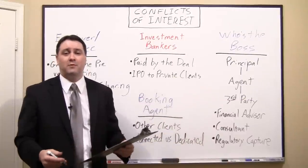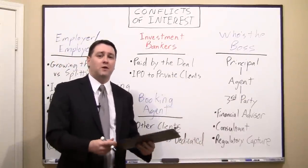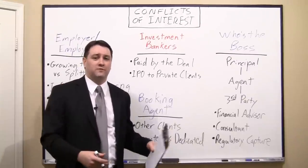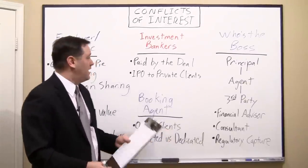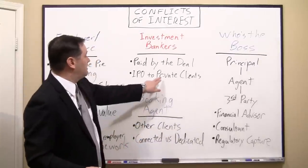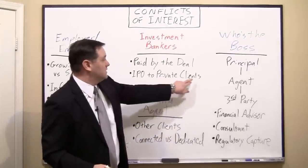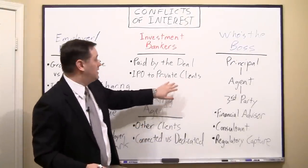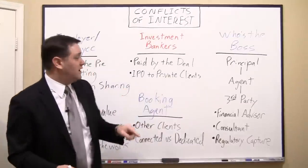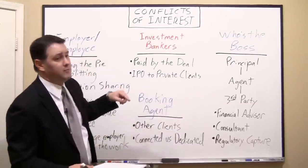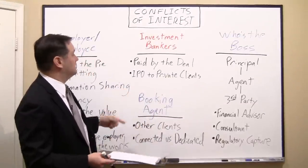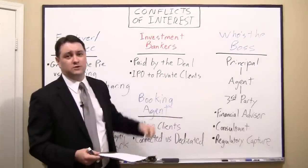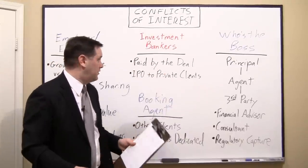They present the underwriting as doing you a favor, but they also have a conflict of interest because they want the price to go up more for the private clients. If you watch the news about an IPO and the price goes from $20 to $30 on the first day of trading, that's great for those who bought in at $20. But if you're the company, remember you're raising capital — they underpriced it at $20 when you could have sold those shares for $30.